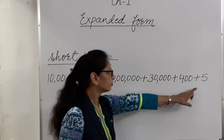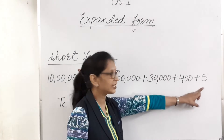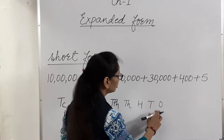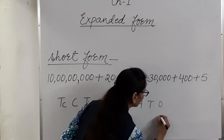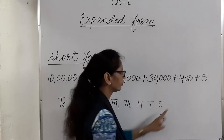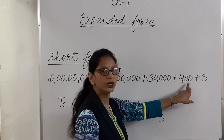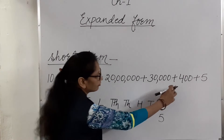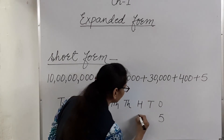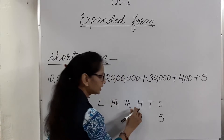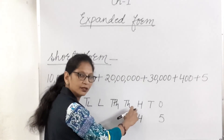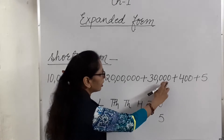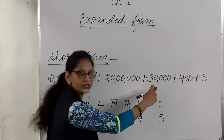Now we will start from the ones place. Five is in the ones place, so we will write 5 here. Four hundred — that means in the hundreds place we will write 4. Four multiplied by hundred equals four hundred. And thirty thousand.